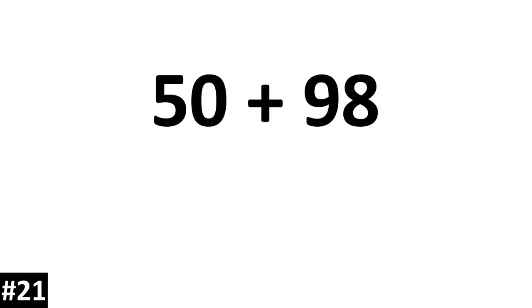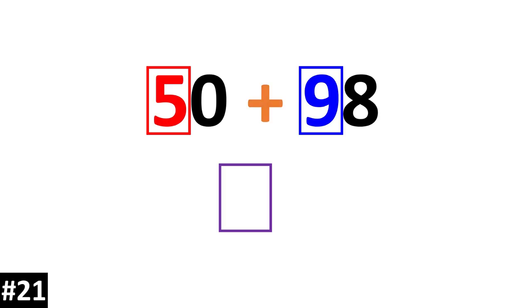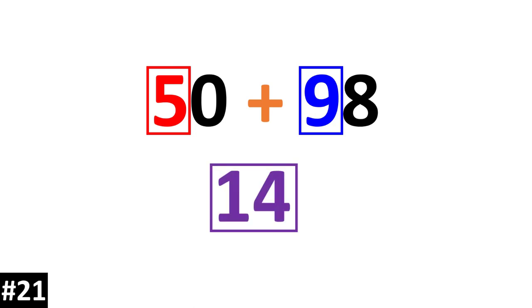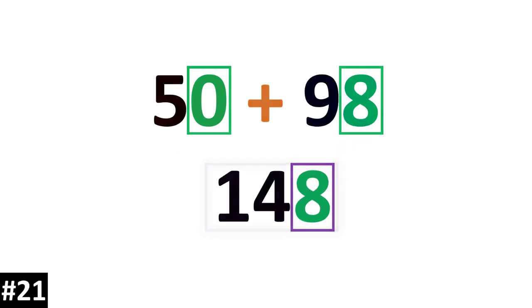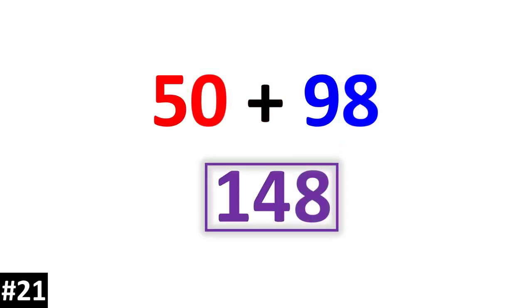50 plus 98. First we just focus on the tens column: 5 plus 9 is 14 tens. We add the ones: 8. The answer is 148.